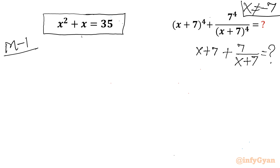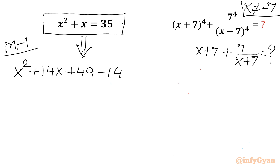Let us begin with our quadratic equation. I will write x² as it is, then add 14x + 49, and subtract the same: minus 14x minus 49. Now for the x term, I will write x + 7 which is required, then minus 7. Right hand side is 35.